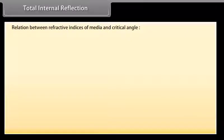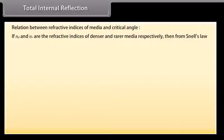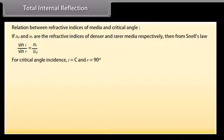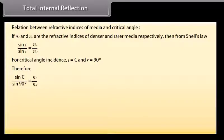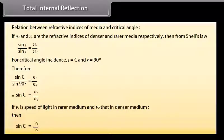Conditions for total internal reflection: The ray must pass from a denser medium to a rarer medium, and the angle of incidence in the denser medium must be greater than the critical angle. Relation between refractive indices and critical angle: If N_D and N_R are the refractive indices of the denser and rarer media, then from Snell's law, sin C = N_R / N_D. If V_R and V_D are the speeds of light in rarer and denser media respectively, then sin C = V_D / V_R.